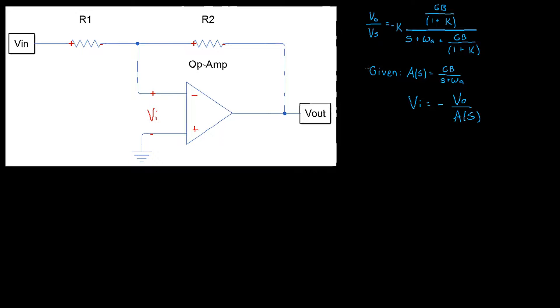We're given two equations: one for A(s) which is the gain bandwidth product divided by s plus omega_a, where omega_a is the negative 3dB frequency. The A(s) equation is simply the equation used in the one pole roll-off method. The vi equation can be derived by finding the gain of the op-amp, which is simply negative r2 over r1. If you're unfamiliar with this I'd urge you to go back to the earlier videos before going on to this video.